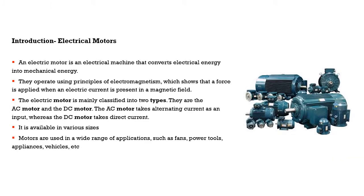To start with, you should know some basic points on electric motors. First, the definition: an electric motor is nothing but an electric machine that converts electrical energy into mechanical energy. The second point is the working principle — it works on the principle of electromagnetism. The third point covers the different types of motors: basically there are two types, the AC motor and the DC motor. The DC motor uses direct current as input.